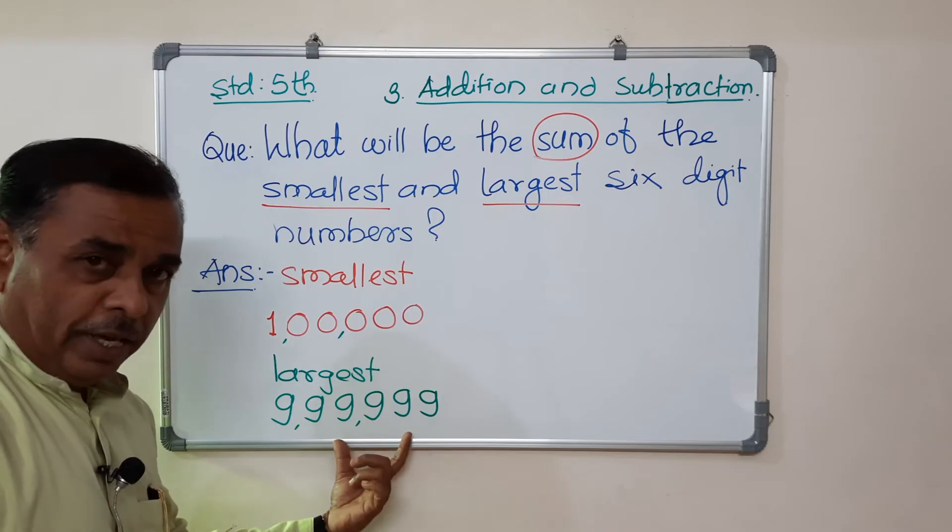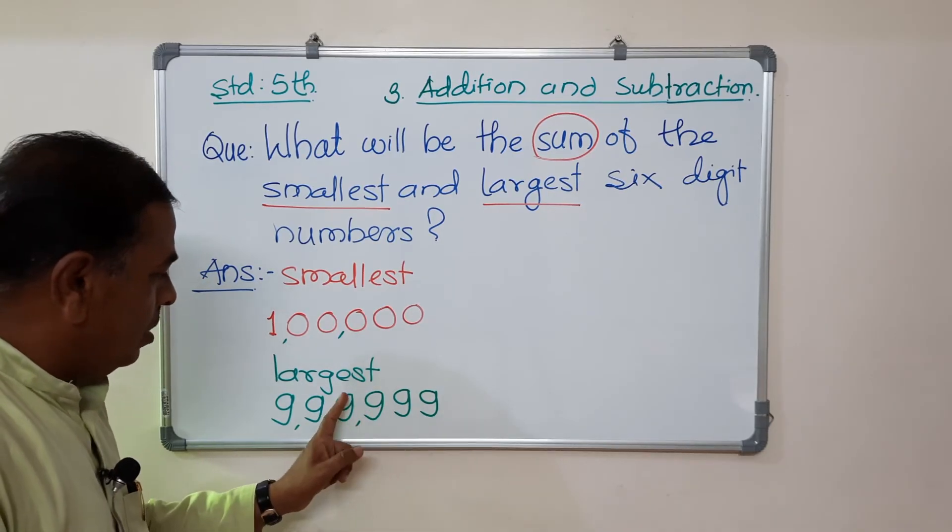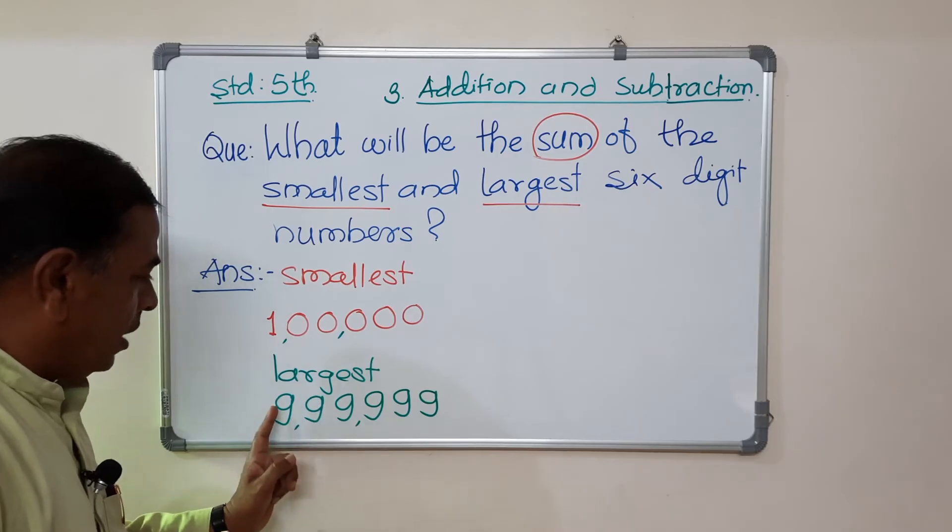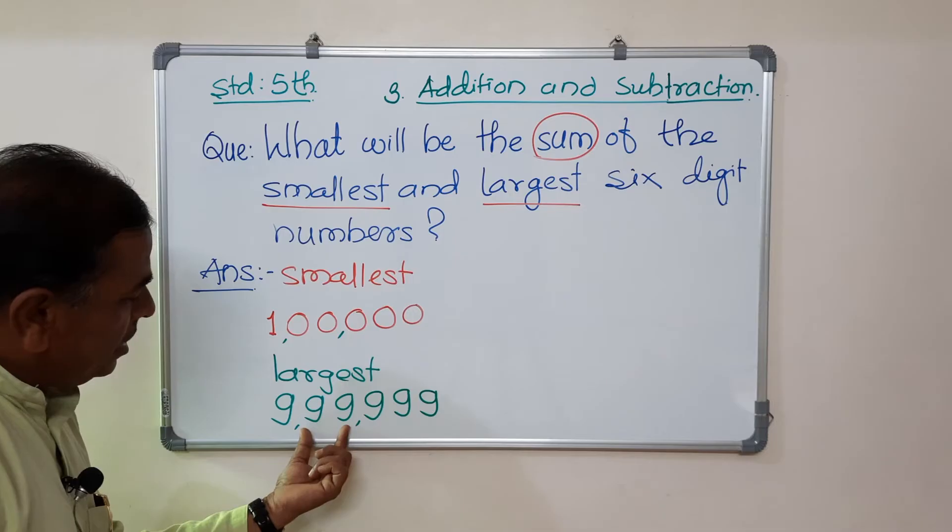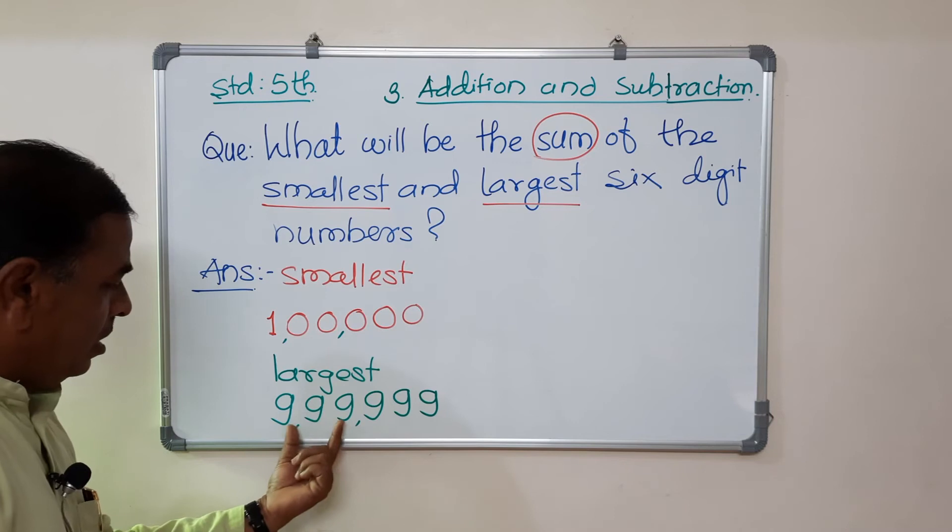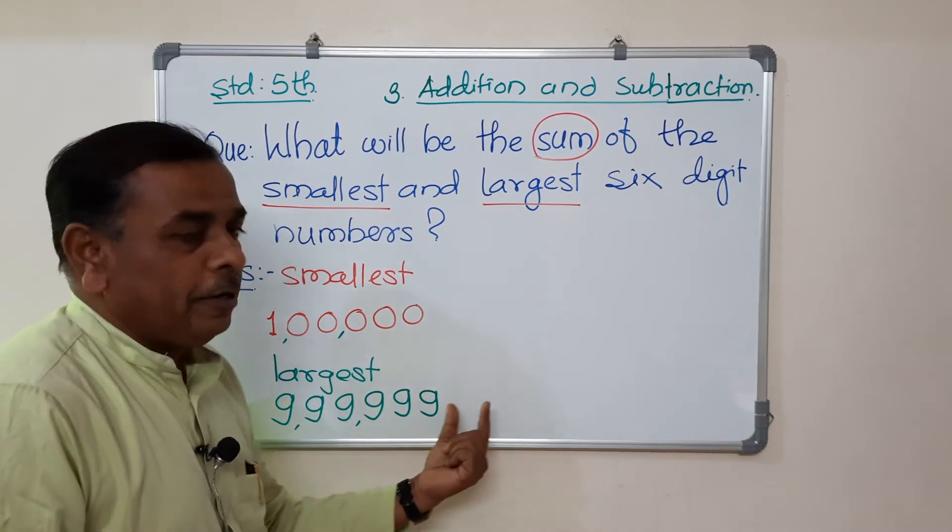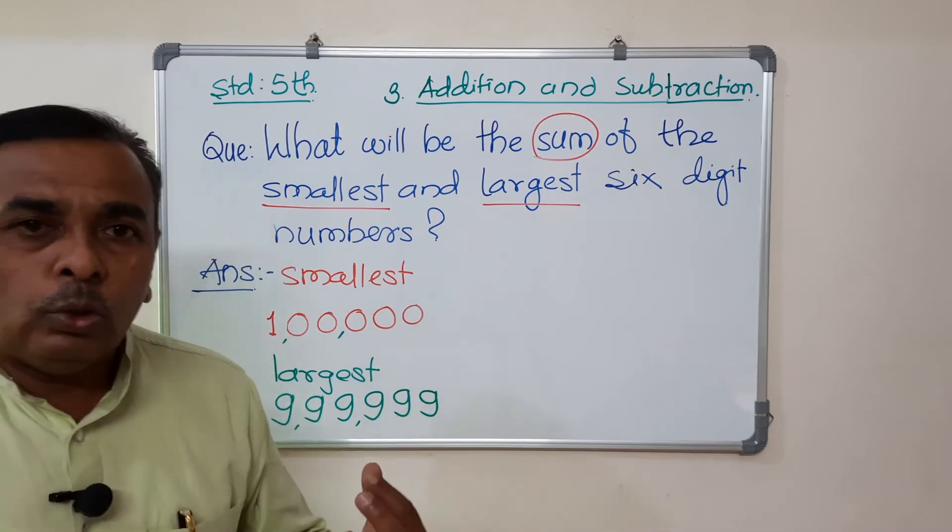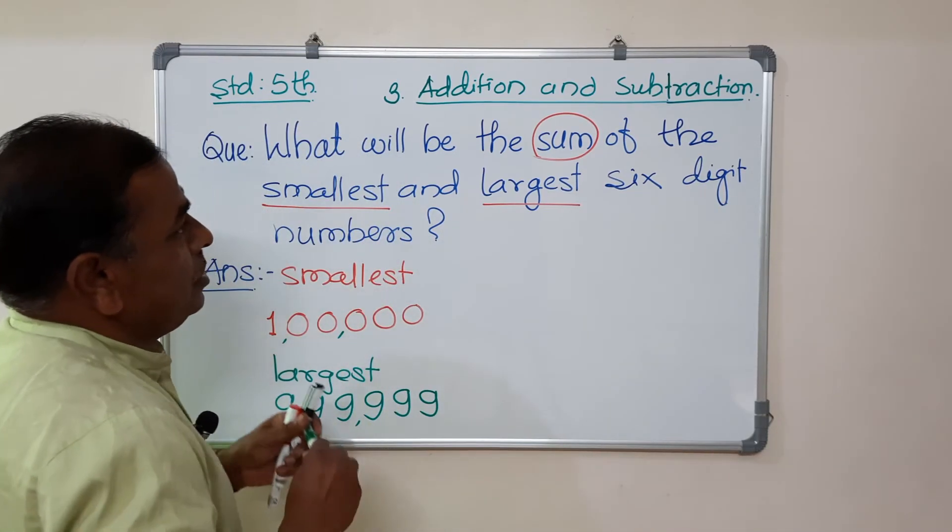And this one? Unit, 10, 100, 1000, 10,000, lakh. 9,99,000. 9,99,999. 9 lakh, 99,999.